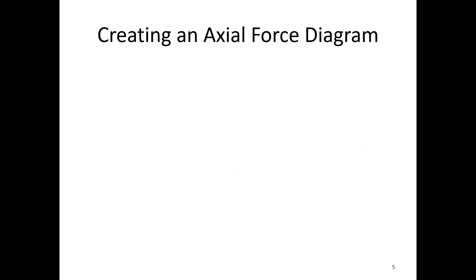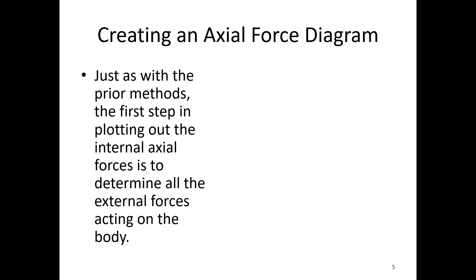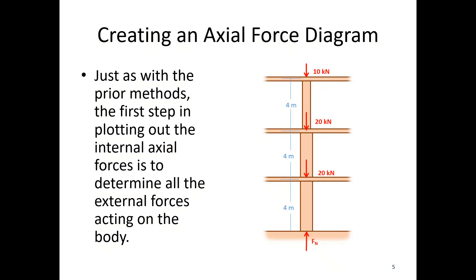So how do we create this axial force diagram? The first step is to determine all of the external forces acting on the body. Unless we know the magnitude of all those external forces we can't make the plot. For example, here we've got a column — a main support column in a building — so the roof is 10 kilonewtons and I've got 20 kilonewtons from each of the floors it's supporting above it. I need to do a simple statics problem to figure out that the reaction is going to be 50 kilonewtons before I go further.